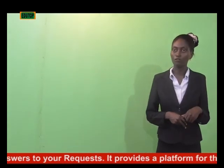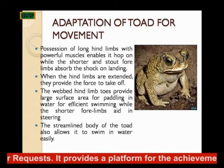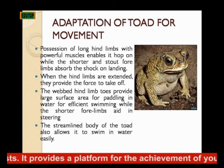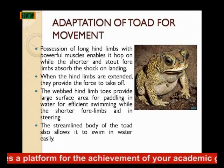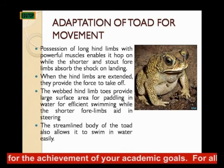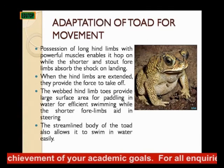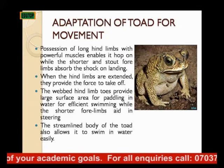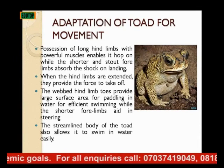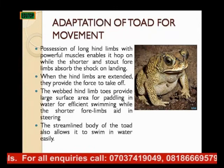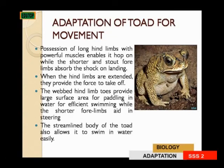The toad possesses long hind limbs with powerful muscles which enable it to hop, while the shorter and stout forelimbs absorb the shock on landing. The hind limbs, which are the back legs, are long, while the front limbs are very short — so when it jumps with its long limbs, the short ones absorb the impact. When the hind limbs are extended, they provide the force to take off. The toad also has webbed hind limbs and toes, which provide greater propulsive effort in water.